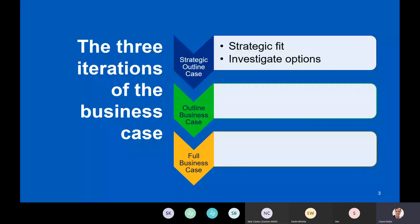Does it fit with the organisation's strategy? What you want is permission to investigate options. So maybe you've identified a particular area the organisation could succeed better in, and you're going to investigate options for fixing that need, problem, or opportunity. The second iteration is the outline business case — the chunky one — where you outline all of your options and show how you've narrowed them to a short list. If you're going out to tender, you produce tender documentation for suppliers.